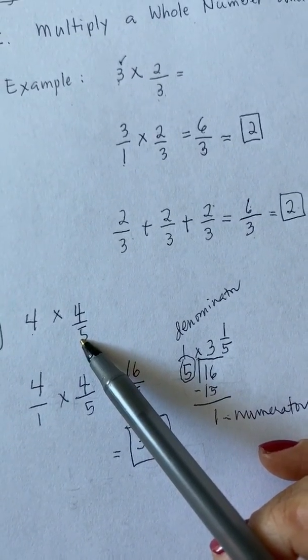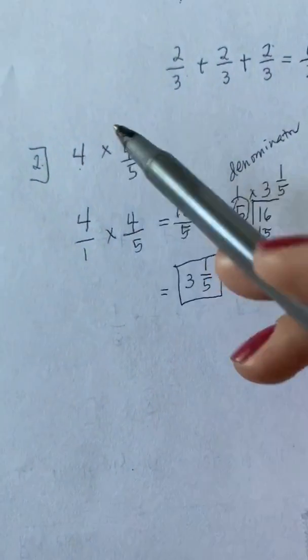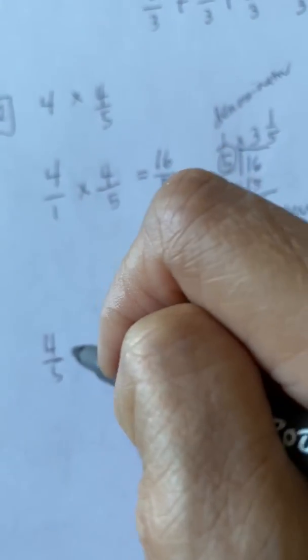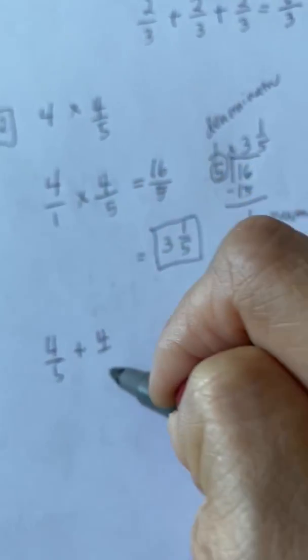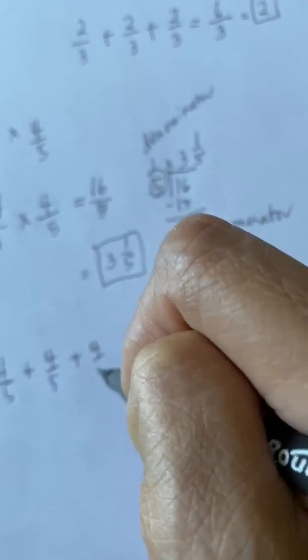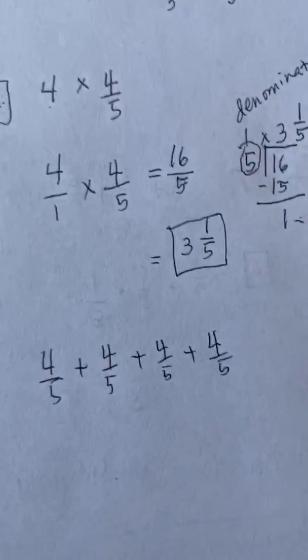Yes, we are going to add it 4 times. So we can write it down as 4 fifths plus 4 fifths plus 4 fifths plus 4 fifths. There you are.